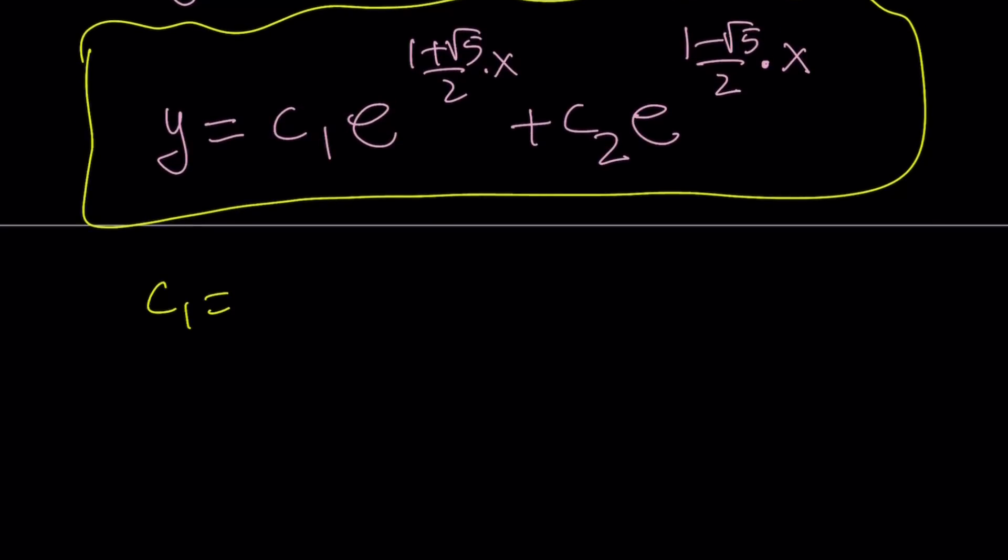What happens if c1 and c2 are both equal to 0? Then we get y equals 0 as a solution, and that's actually also true because if you think about this, you have a function who is a constant, 0, its second derivative is 0, everything is 0, and the answer is also going to be 0.